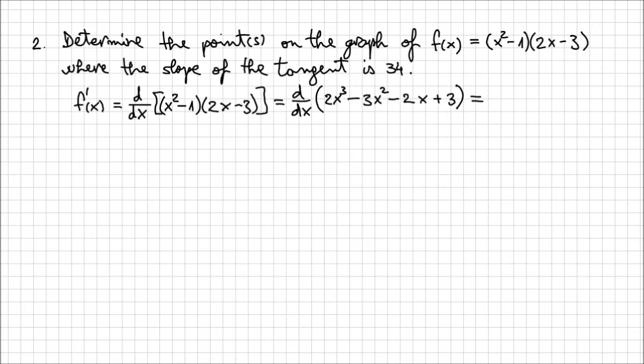So this is going to become 2 times 3, which is 6, x³⁻¹, which is x², so 6x². Minus 3 times 2, which is 6 again, x²⁻¹, so minus 6x. Minus 2, derivative of x is 1, so minus 2 only.